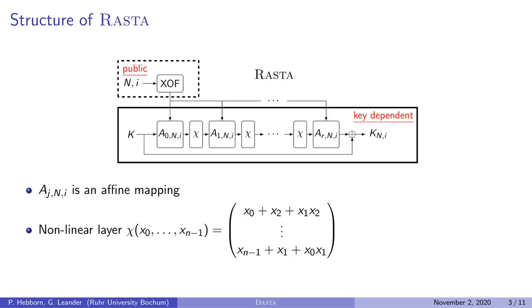Let's start with the structure of RASTA. The initial state is the key, and one round consists of two parts. First, we have an affine mapping, and this is pseudorandomly generated by an expandable output function which takes as input a nonce and a block counter. This XOF could be, for example, SHAKE-256. What is also important is that the generation of the affine layer is public, so the evaluation of the XOF does not count into the AND metric.